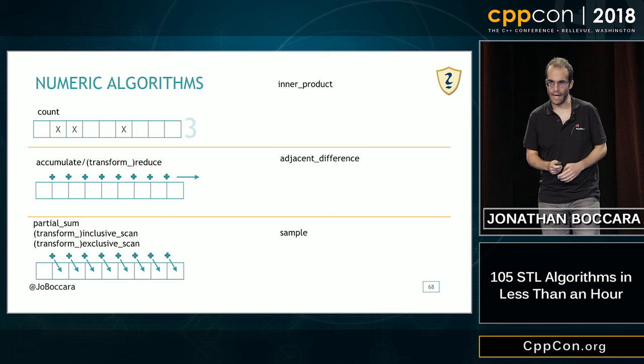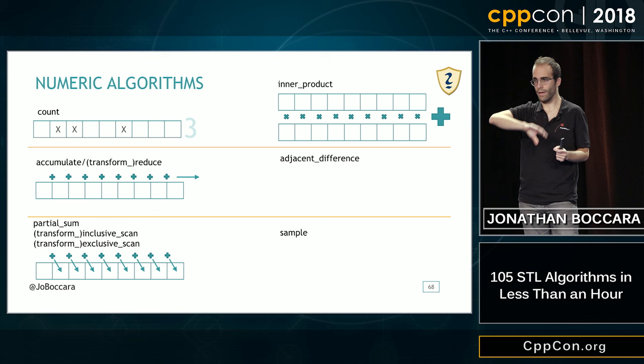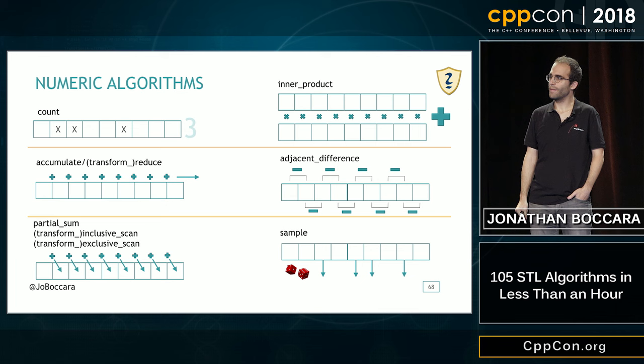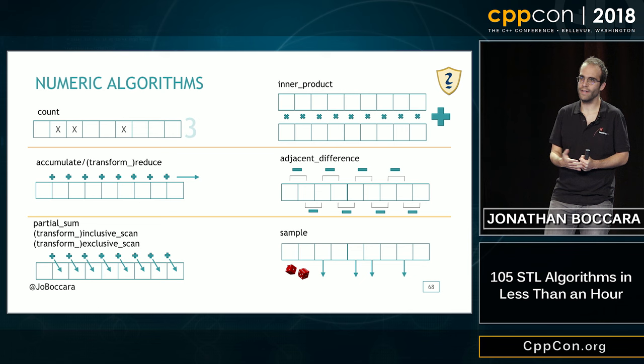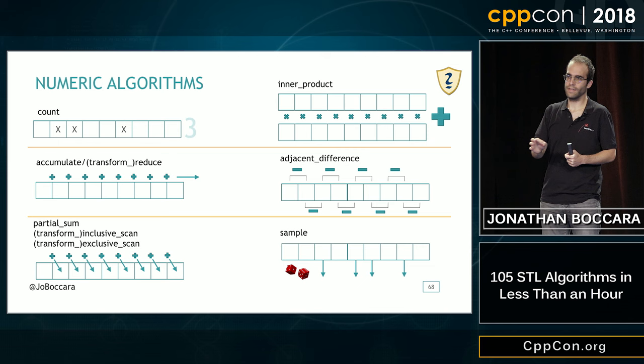Inner_product computes the inner product of the collection — multiplying counterpart elements and then summing everything. Adjacent_difference makes the difference between every two neighbors in the collection. And sample, appearing in C++17, takes something that generates random numbers and a number n, and produces n elements of that collection selected randomly.